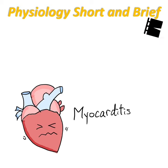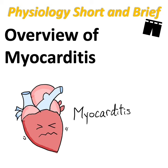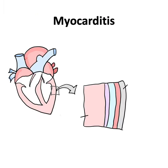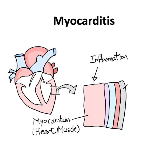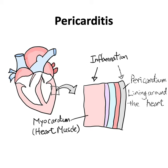A short and brief overview of myocarditis. Myocarditis is inflammation of the myocardium, or the heart muscle. Pericarditis, by contrast, is the inflammation of the pericardium, or the lining of the heart.